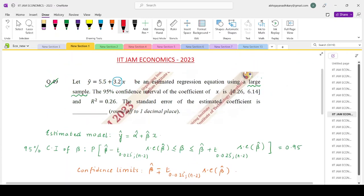It has been told to round to one place of decimal. So your answer is, the standard error is 1.5. Thank you.